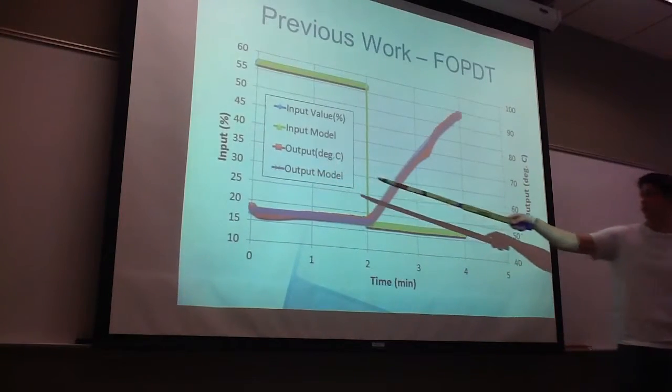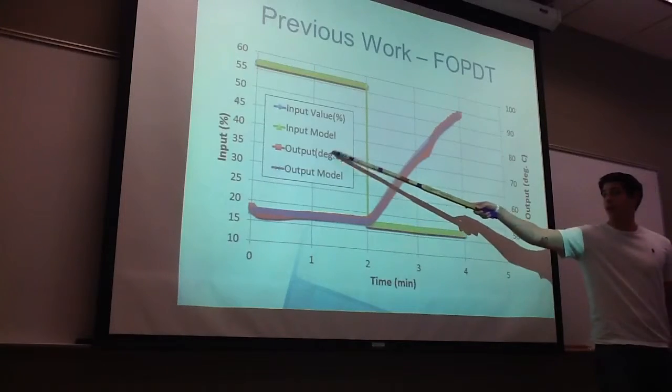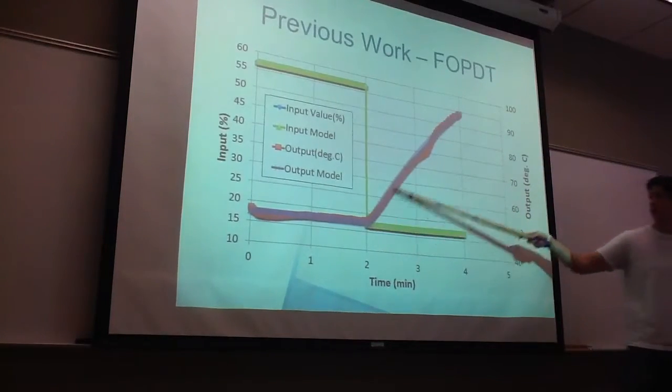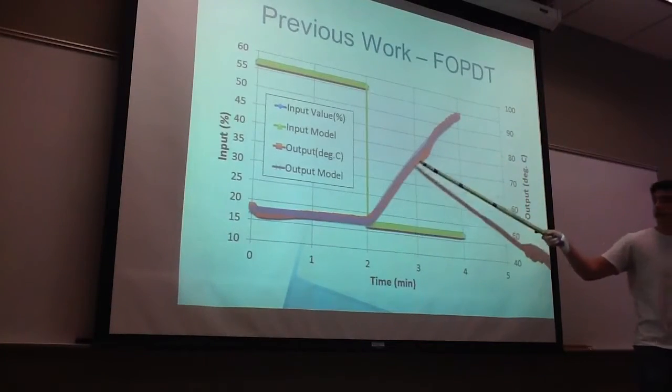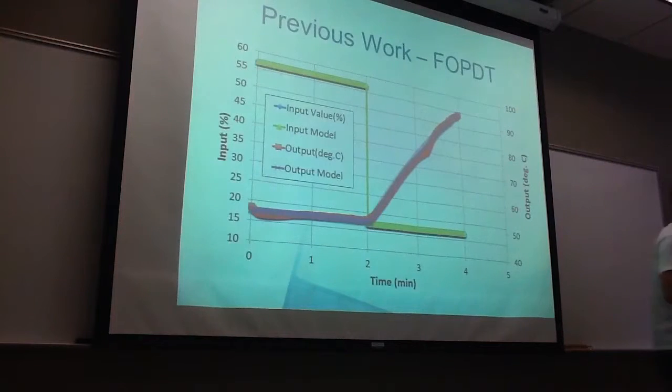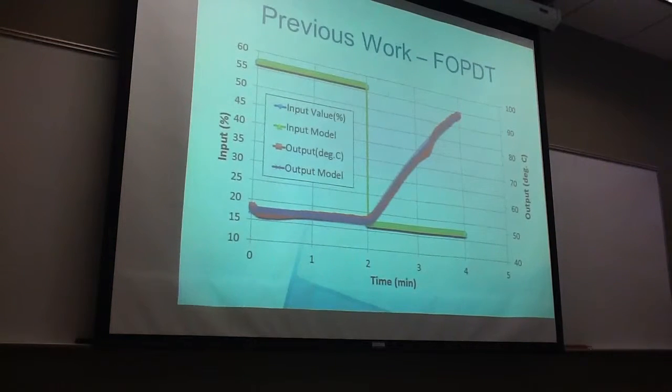of our actual results is in the red. And then our model results is in the purple. And looking at the graph, they are pretty similar, which means that our model is pretty accurate.